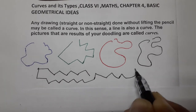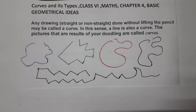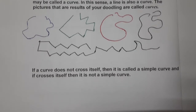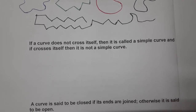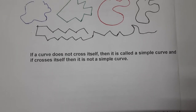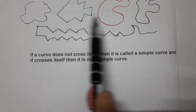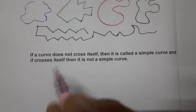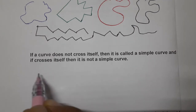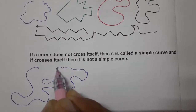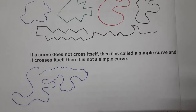Next, if a curve does not cross itself, then it is called a simple curve. If it crosses itself, then it is not a simple curve. See here — all these curves do not cross themselves, so they are all simple curves.